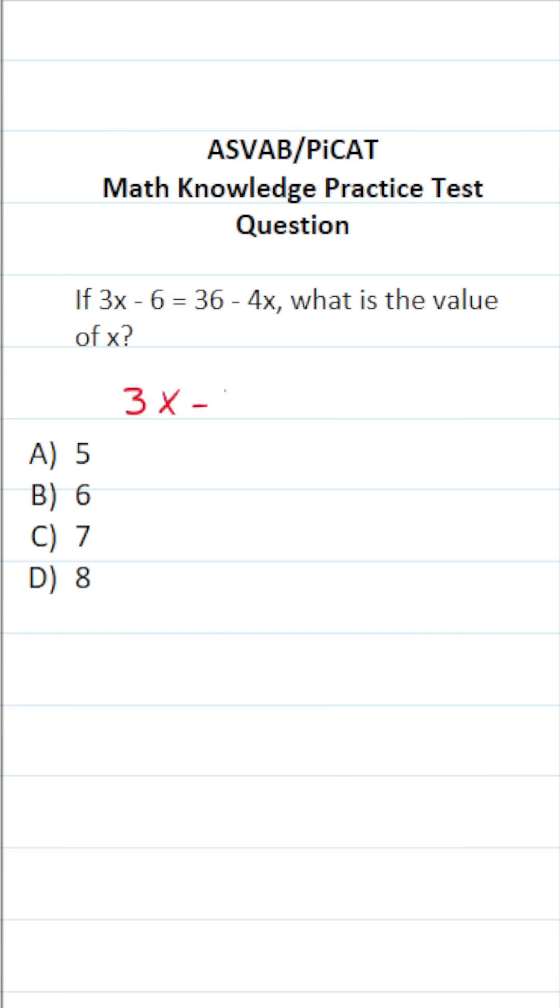On the actual ASVAB and PiCAT, you're not given a reference sheet or a calculator. So you want to get in the habit of copying these things down and working them out on your own scratch paper.